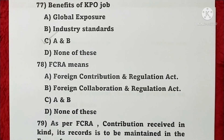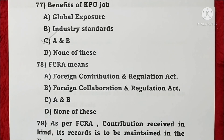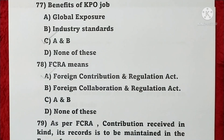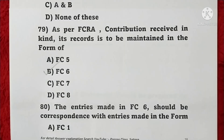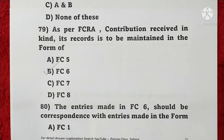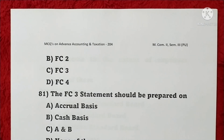Question 78: FCRA means Foreign Contribution and Regulation Act — option A is correct. Question 79: As per FCRA, contributions received in kind must be recorded in the form FC6 — option B is correct. Question 80: The entries made in FC6 should correspond with entries made in the form FC3 — option C is correct.